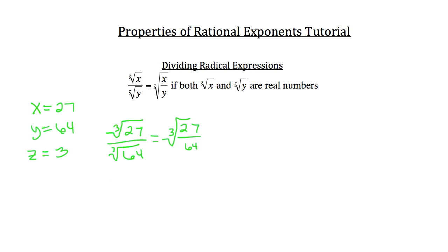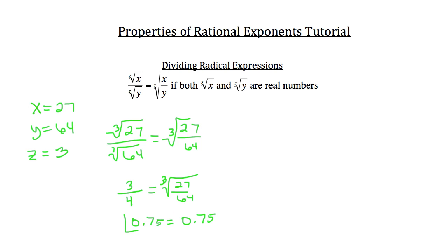You know that the cubed root of 27 is 3 and the cubed root of 64 is 4. So that should equal the cubed root of 27 over 64. If you check with your calculator, 3 fourths is 0.75, and the cubed root of 27 over 64 is also 0.75. So that checks out.